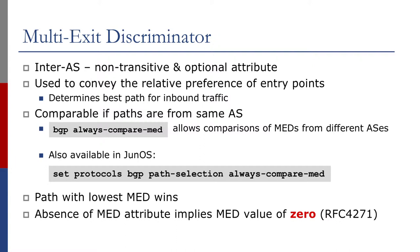In Cisco IOS, the command is 'bgp always-compare-med'. The path with the lowest MED wins, and the absence of an MED attribute implies an MED value of zero — that's per RFC.